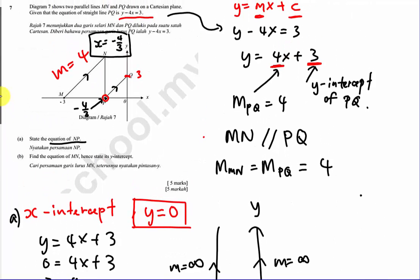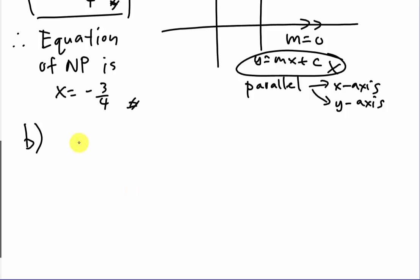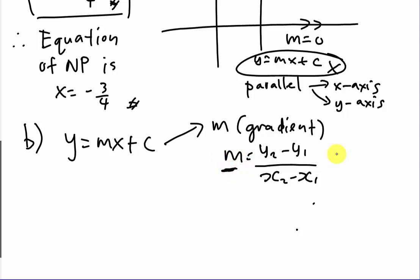For part (b), find the equation of MN. Whenever the line is not parallel to the x-axis or y-axis, you always need to use y equals mx plus c. To form this equation you need two pieces of information: first, the gradient of the straight line — in this case it equals 4 because MN is parallel to PQ.